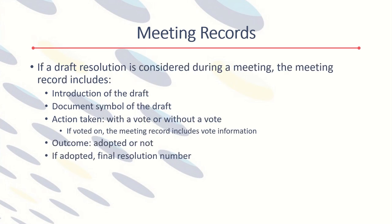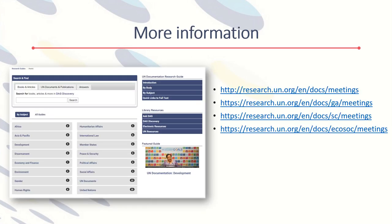If a draft resolution is considered during a meeting, there is detailed information about the action, including the symbol of the draft, the action taken, the outcome of any vote held during the meeting, and the adopted resolution number. In short, meeting records contain a wealth of information.